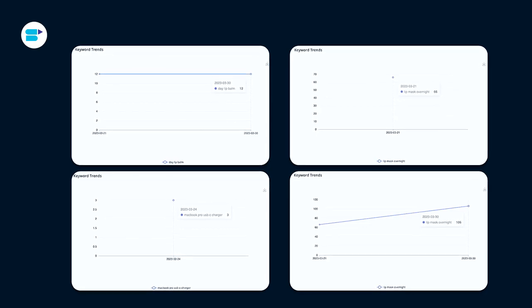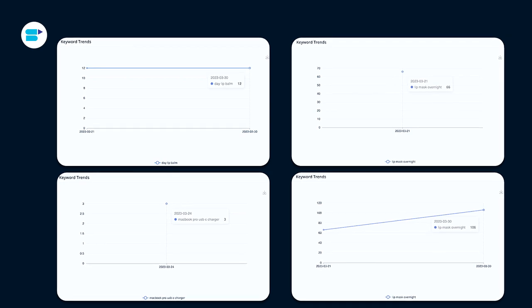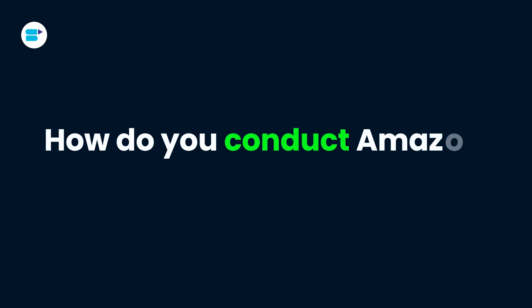Let me show you something interesting. These are the keyword trends for tracked keywords which you'll find in SellerApp's product intelligence feature. If you wish to add high converting keywords to your listings and advertising, stay tuned. So how do you conduct Amazon keyword research? If you want to succeed on Amazon, you need to play by the book but also play it smart. This video shows how to conduct keyword research the right way.